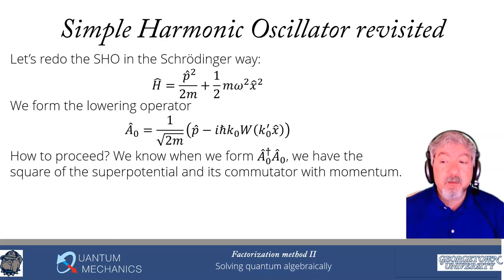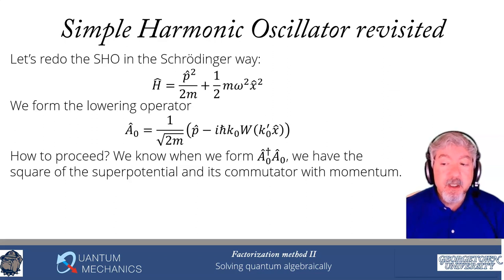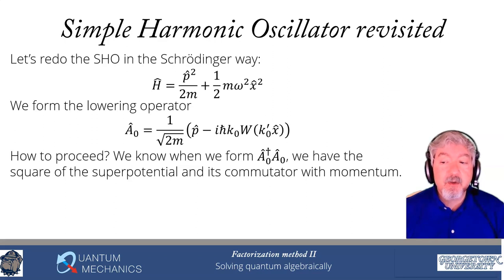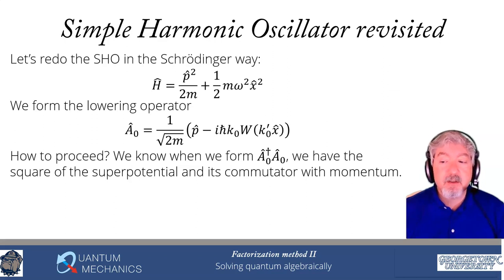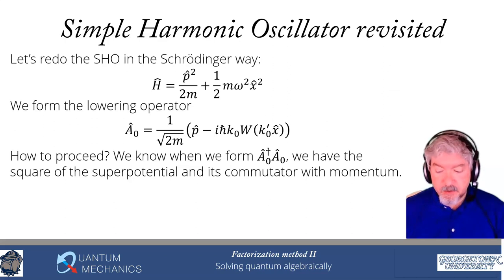If I pick the superpotential proportional to x, when I square it I get x², and when I take the commutator with p̂ I get a number. As long as A0†A0 equals the Hamiltonian plus some number — and that number has the right sign and behavior consistent with the eigenvalues of the problem — then we're okay. We'll see a little more about that in just a moment.